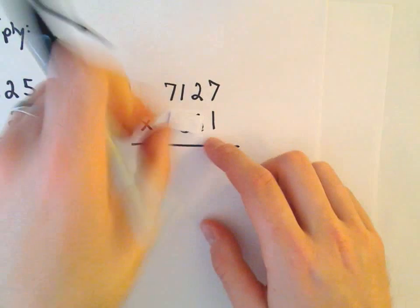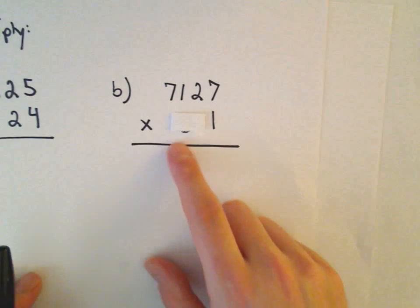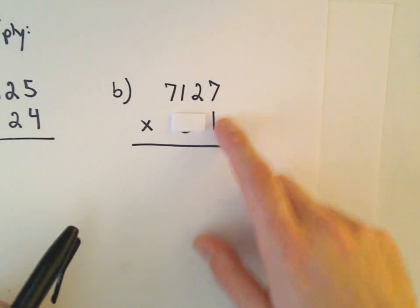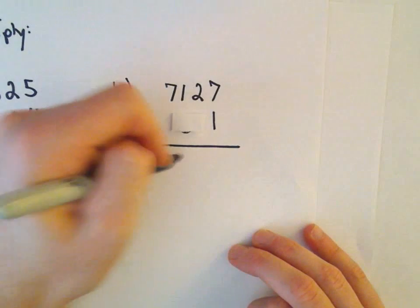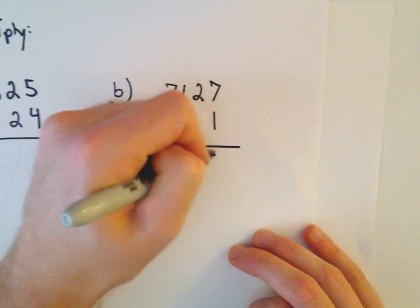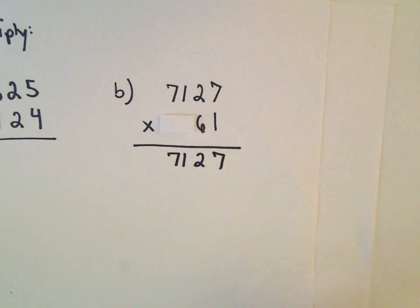All right, again, let's pretend that first digit, those first two digits just aren't there. Well, if you multiply anything by 1, you just get the number. So 1 times 7,127 will be 7,127. All right, that wasn't too bad.